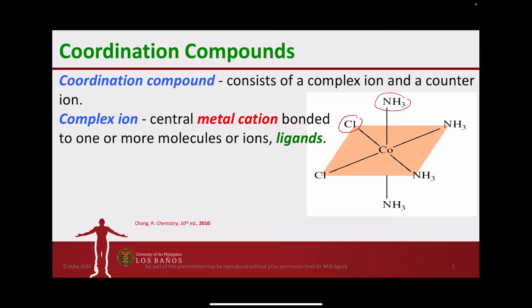For cases where the complex is charged, you would expect it to have a counter ion — either an anionic counter ion or a cationic counter ion. The central metal cation in a complex has two valences.